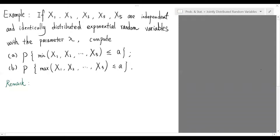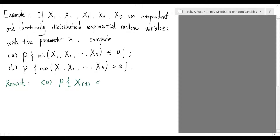In the language of order statistics, these two problems are straightforward. In particular, problem A is the same as the probability that X sub (1) is less than or equal to a, and problem B is the same as the probability that X sub (5) is less than or equal to a.